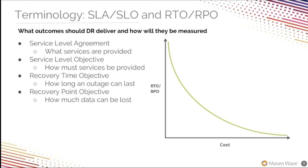Before we take a deep dive, let's ground on a few key terminologies. Service level agreements — an agreement that specifies what services are to be provided between parties. Service level objective — it is an extension of a service level agreement. It helps to measure the performance of a service per specific calculations such as availability over a week, a month, or a quarter.